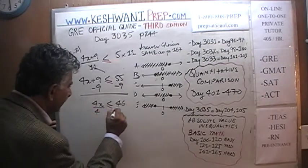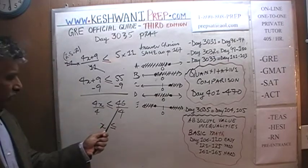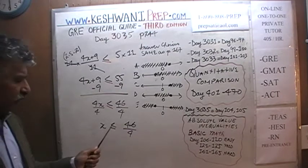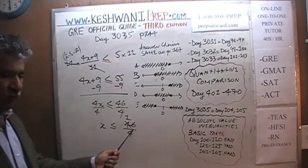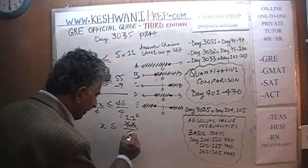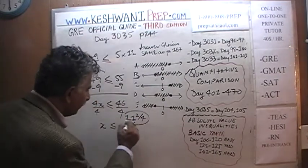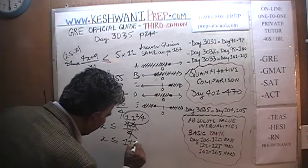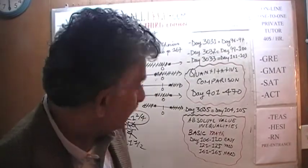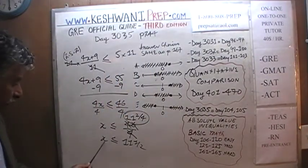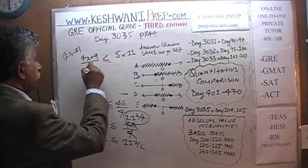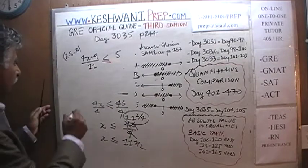Divide both sides by 4, and x has to be less than or equal to 46 over 4. Dividing top and bottom: 46 over 4 — 4 goes into 4 once, and into 46 eleven times with a remainder of 2, so it is 11 and 2 fourths, which is the same as saying x is less than or equal to 11 and a half. Any value less than or equal to 11½ should work. If we try x = 11, it should work.